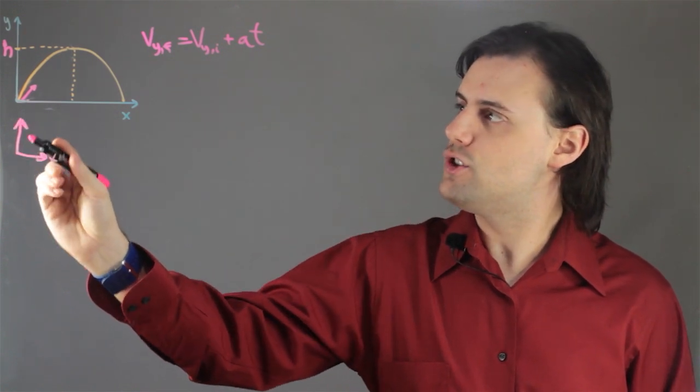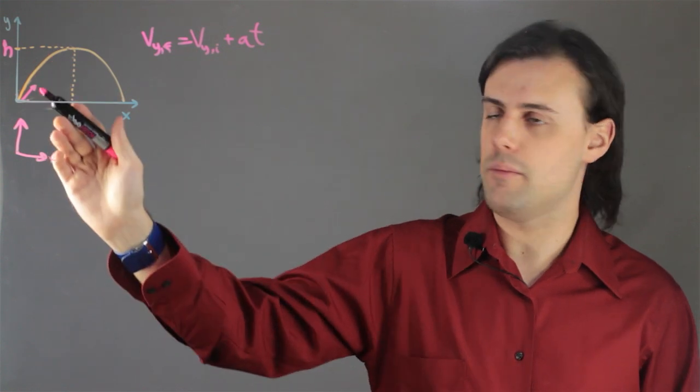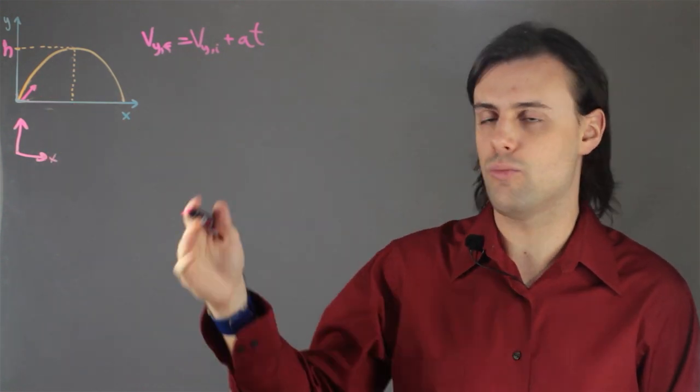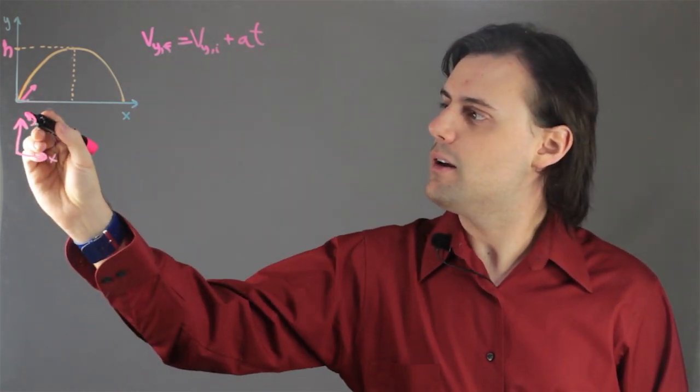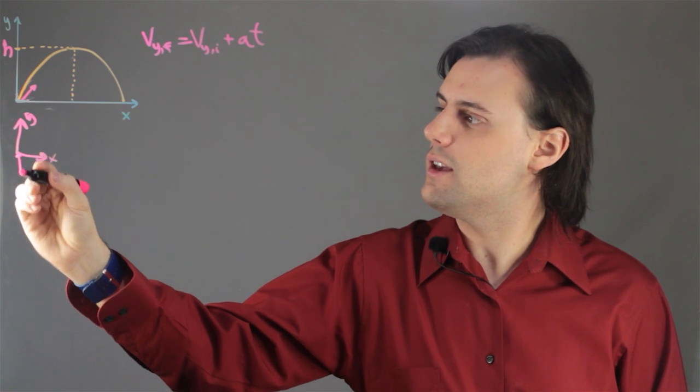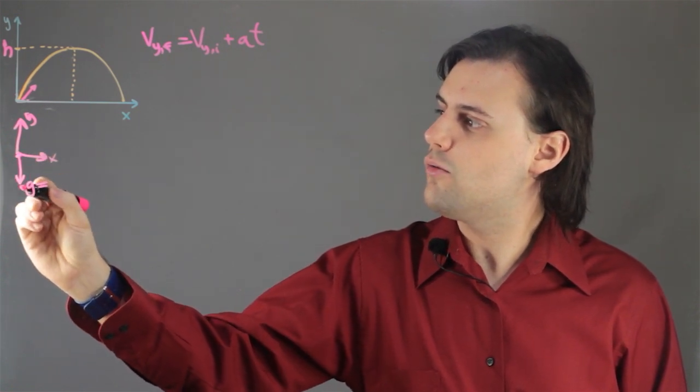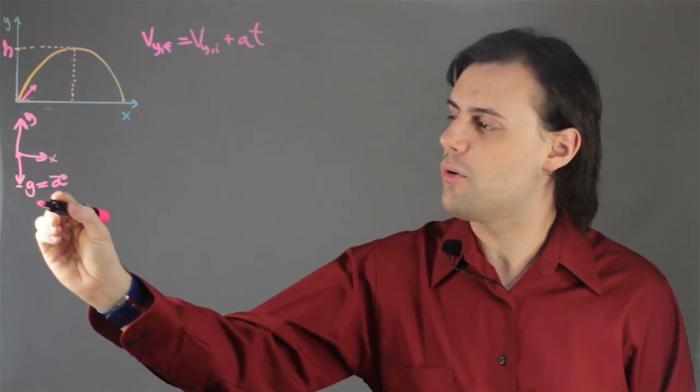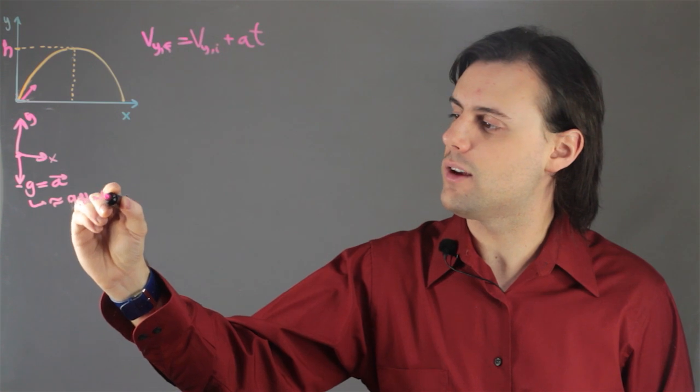And because I've chosen the y direction to go up and be positive, I'm going to remain consistent. It doesn't matter as long as one remains consistent throughout the calculation and the derivation. Because of that, I have the gravitational acceleration equal to negative g, where g is approximately 9.81 meters per second squared.